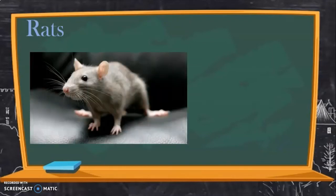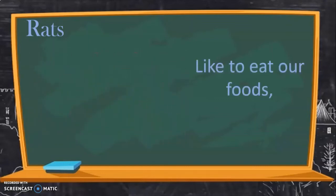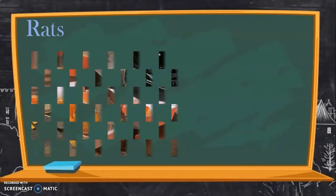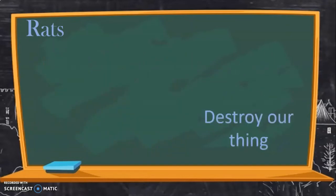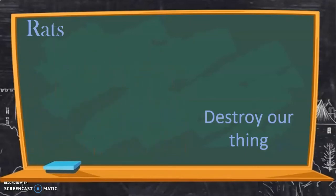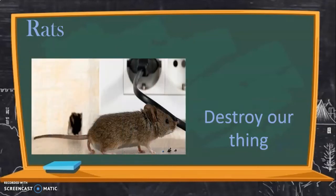Now the rat. Okay, yes. Did you recognize that? Yes, it's a rat. Now rats like to eat our food and destroy our things. Just like this. Okay, so the rat like to eat our food and destroy our things at home. Alright, the last one, the ant.